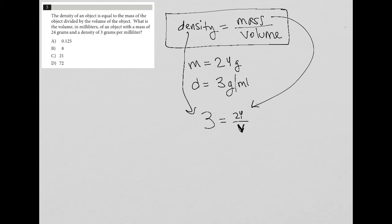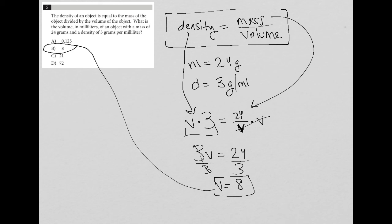To solve for V, I'm going to multiply both sides of the equation by V so that the V variable crosses out on the right hand side. I'm left with V times 3, which I'll write as 3V equals 24. Divide both sides by 3, and I get V equals 8. Therefore, my final answer is choice B.